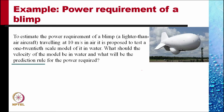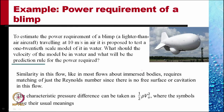Let's do one example to illustrate this method. We are required to estimate the power requirement of a blimp — a lighter-than-air aircraft traveling at 10 meters per second in air. It is proposed to test a 1/20th scale model of it in water. What should be the velocity of the model in water, and what will be the prediction rule for the power required if we measure the power from the blimp model? Similarity in this flow, like most flows about immersed bodies, requires matching just the Reynolds number, since there is no free surface or cavitation.